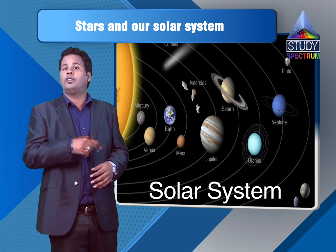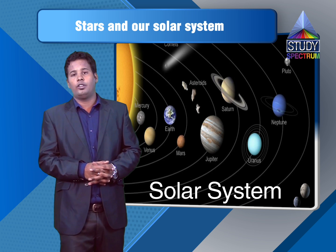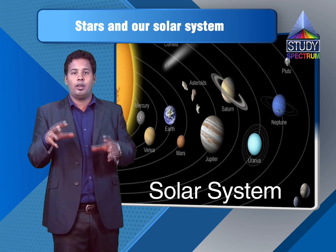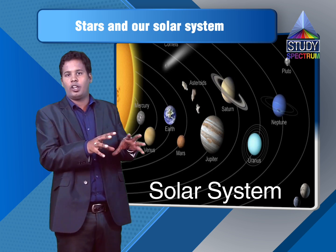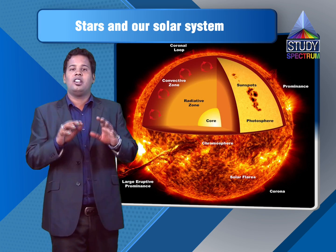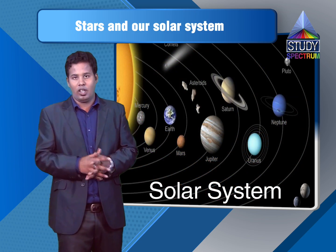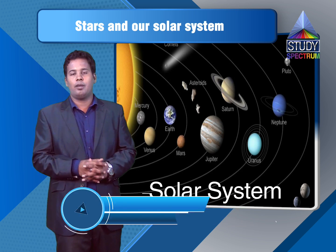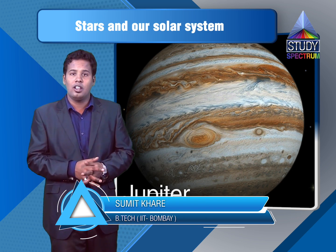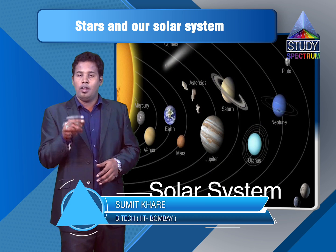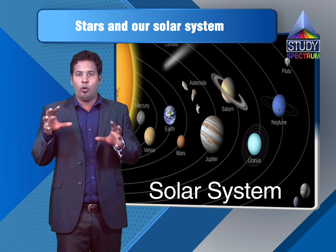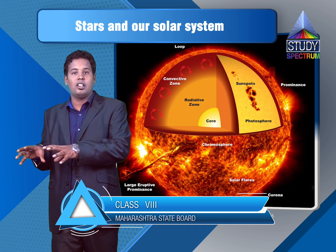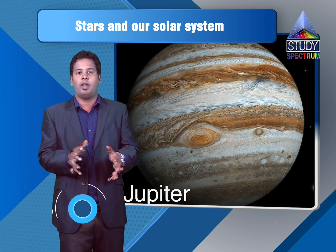If we talk about the mass of the solar system, the vast majority of the system's mass is located in the sun, because the sun is the largest heavenly body of our solar system. With most of the remaining mass contained in Jupiter, which is the largest planet of this solar system. So the majority of the mass is in the sun, and the majority of the remaining mass is located in Jupiter.